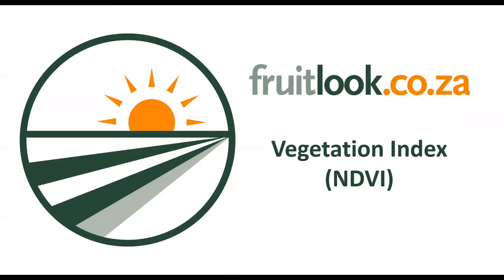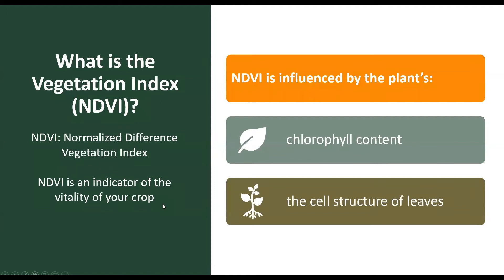Today we will investigate the growth parameter Vegetation Index and how it works. What is the Vegetation Index? NDVI stands for Normalized Difference Vegetation Index, but to put it in simple terms, NDVI is just an indicator of the vitality of your crop — basically, how vigorously your crop is growing.